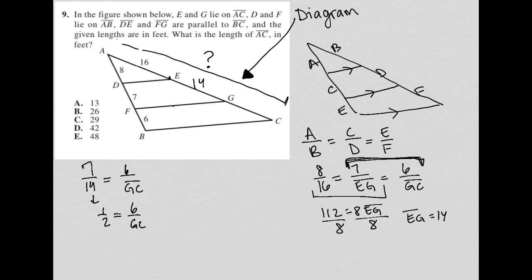And that would mean that GC, let's just do the math. If I cross multiply, I get GC times 1, which is just GC, 6 times 2, which is 12. So GC equals 12. So this is 12.